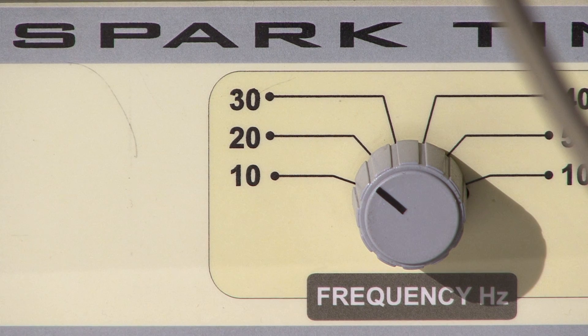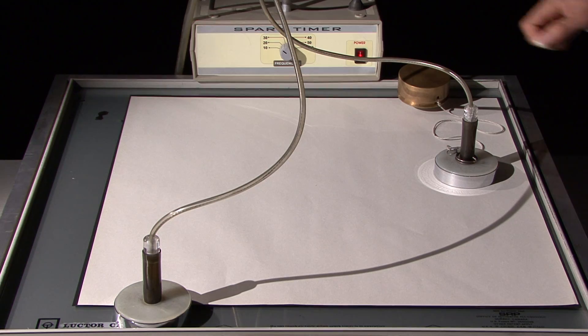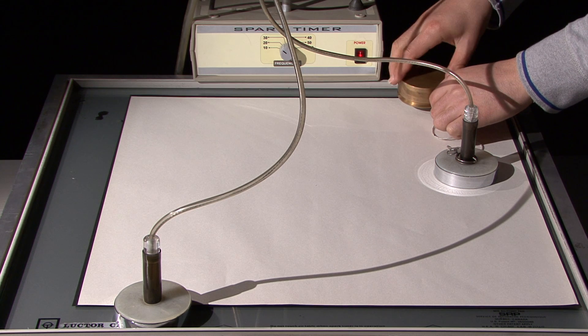Turn on the spark timer. Set the frequency to 20 Hertz. After that, wrap the cord and place the puck.